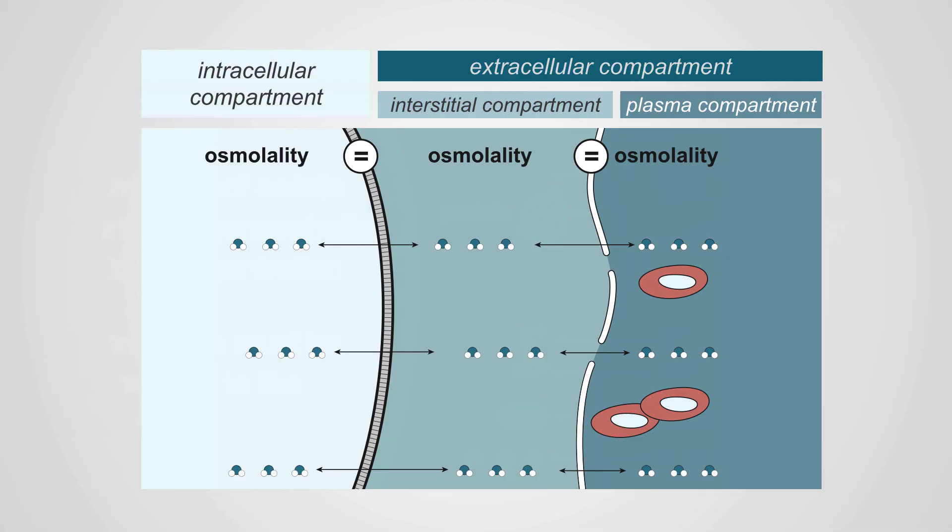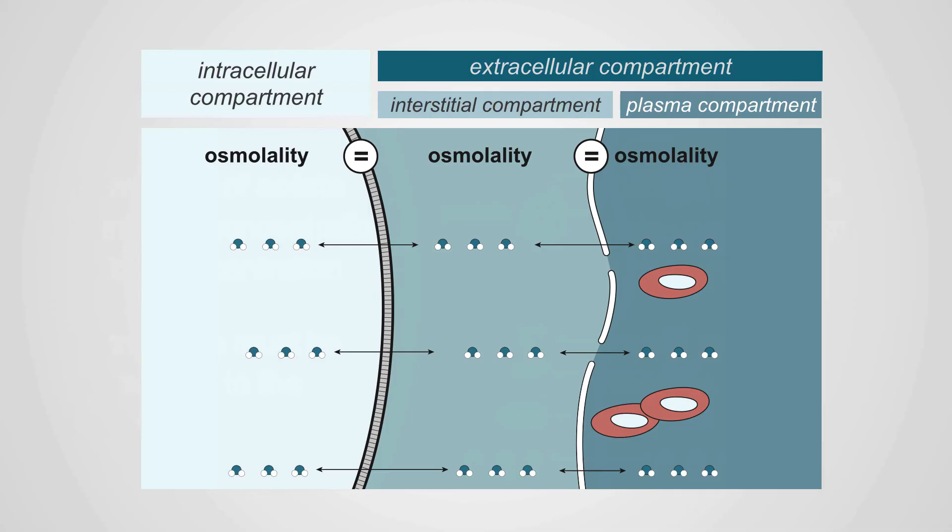Water crosses across all three compartments with no restriction. This has tremendous implications to the body. That means the CSF has the same osmolality as plasma. If it didn't, if the CSF had a higher concentration than plasma, water would rush from the plasma into the CSF, neutralizing that concentration gradient.